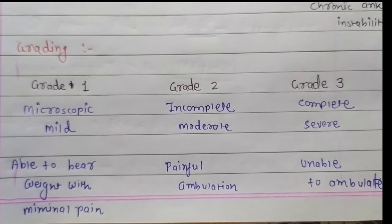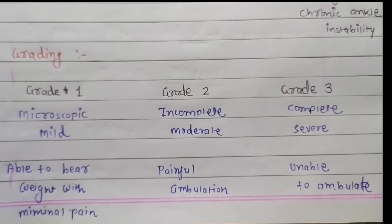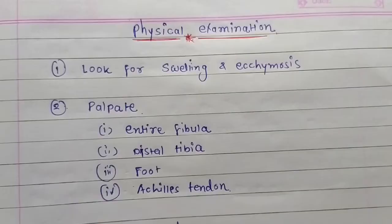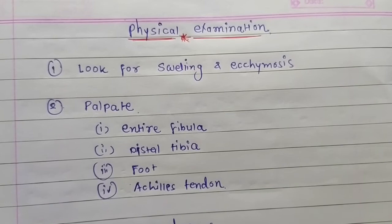In Grade 1 injury, the patient is able to bear weight with minimal pain. In Grade 2, there is painful ambulation. In Grade 3, the patient is unable to ambulate. Physical examination for ankle sprain: first, look for swelling and ecchymosis; second, palpate the entire fibula, distal tibia, foot, and Achilles tendon.